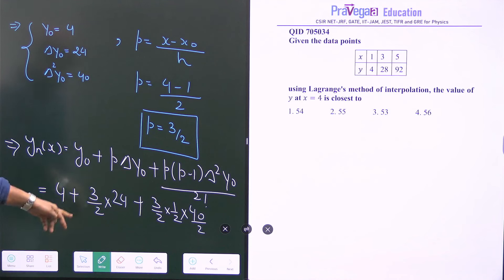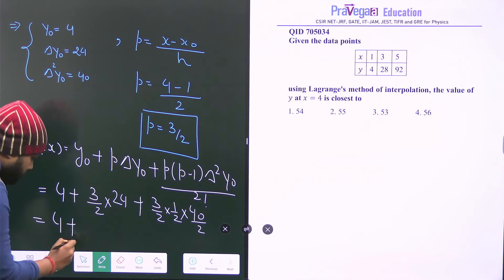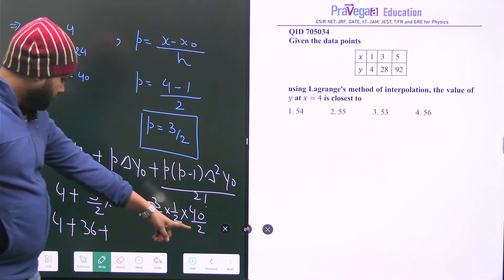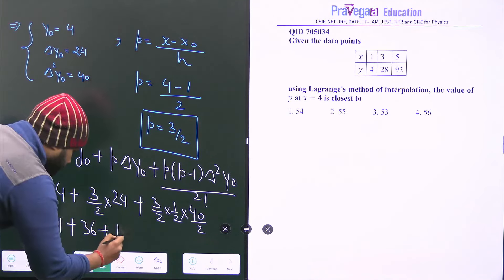Plus 3 by 2 times 1 by 2 into delta square, delta square y0 is 40, and divided by 2 because of 2 factorial. So when you solve this, what we will get? 4 plus 36 plus from here you will get 15.